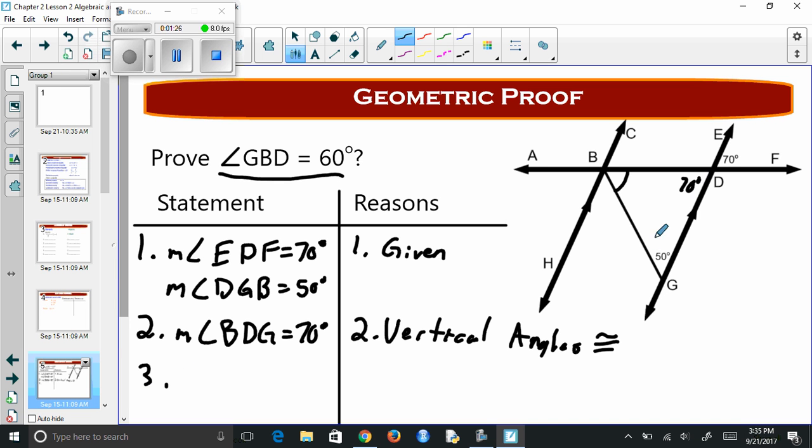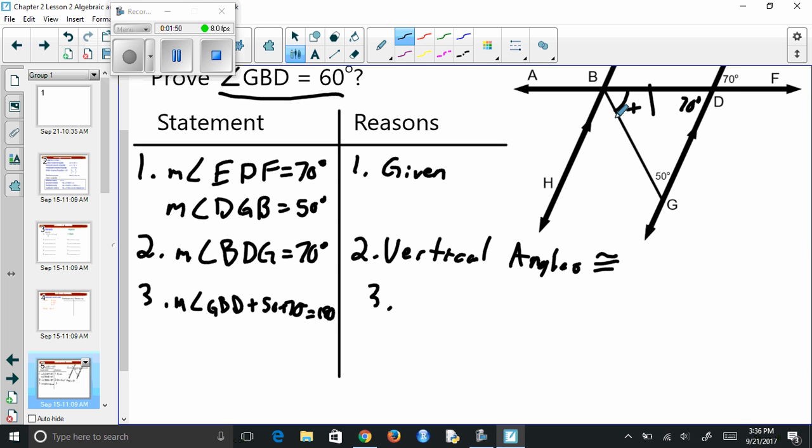So our third one. If I know these, we could just say measure of angle GBD plus 50 plus 70 is going to equal 180. Why do I know that? Because it's the sum of interior angles of a triangle.